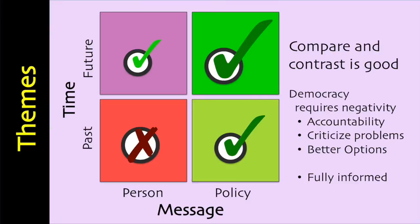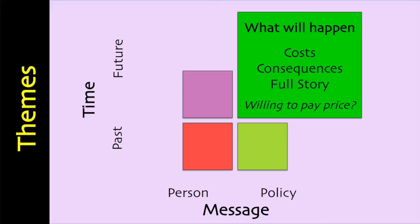You can categorize negative ads into ones that discuss the person or policy, those that address the past and those that address the future. The best strategy is to discuss the effects your opponent's policies will have in the future. We are, after all, voting for the direction of the government over the next four or five years, but based on a foundation of past policy effects. In 2012, Mitt Romney tried to show how Obama was planning to change welfare reform.